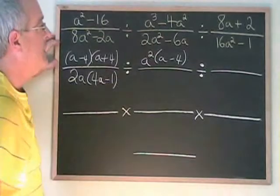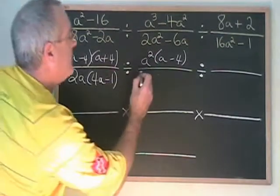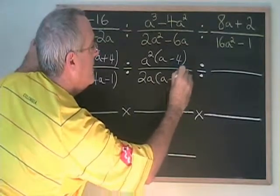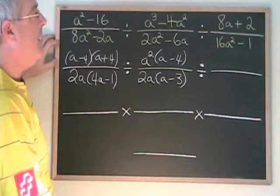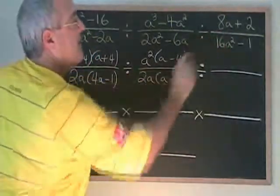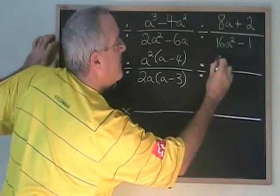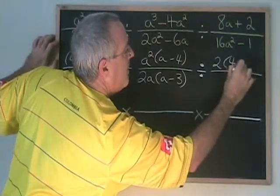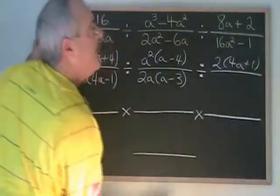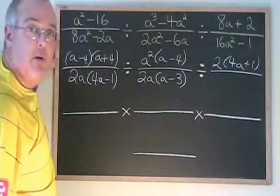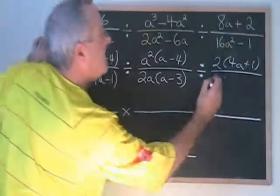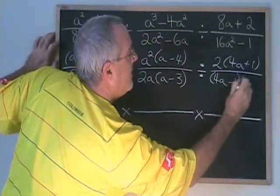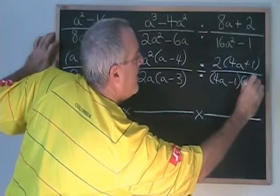2a squared minus 6a is a common factor and factors to 2a(a minus 3). 8a plus 2 is a common factor and factors to 2(4a plus 1). And finally, 16a squared minus 1 is another difference of squares and factors to (4a minus 1)(4a plus 1).